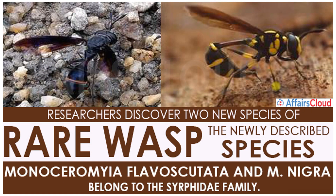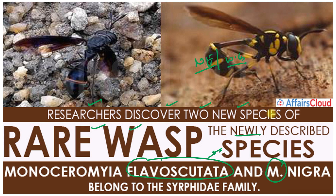Researchers discovered two new species of rare wasps. The newly described species were found in the northeastern states of India as well as in the Western Ghats. The two species are M. Nigra and M. Levaskustar.